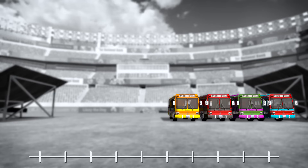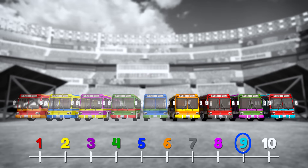Let's use that number line again. But this time, instead of moving right for adding, we'll move left for subtracting. We'll start at nine, and then move to the left five spaces, because we subtracted five buses.